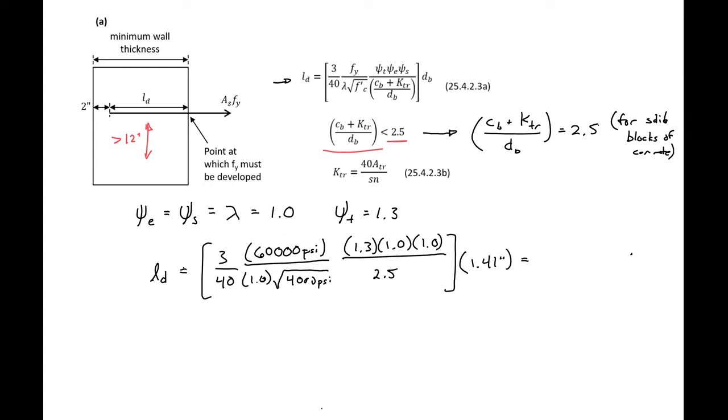So this will give us a development length then of 52.2 inches, and we remember that our minimum is 12 inches and we're far greater than our 12, so we're okay here.